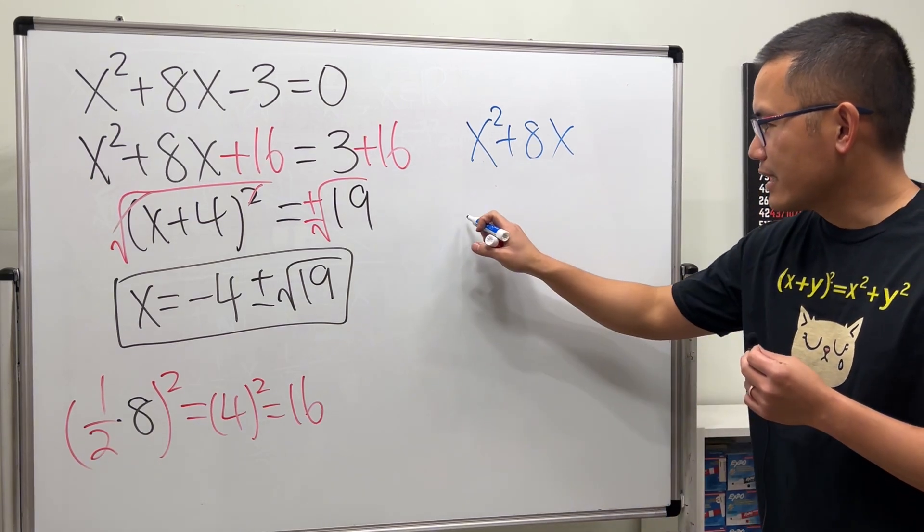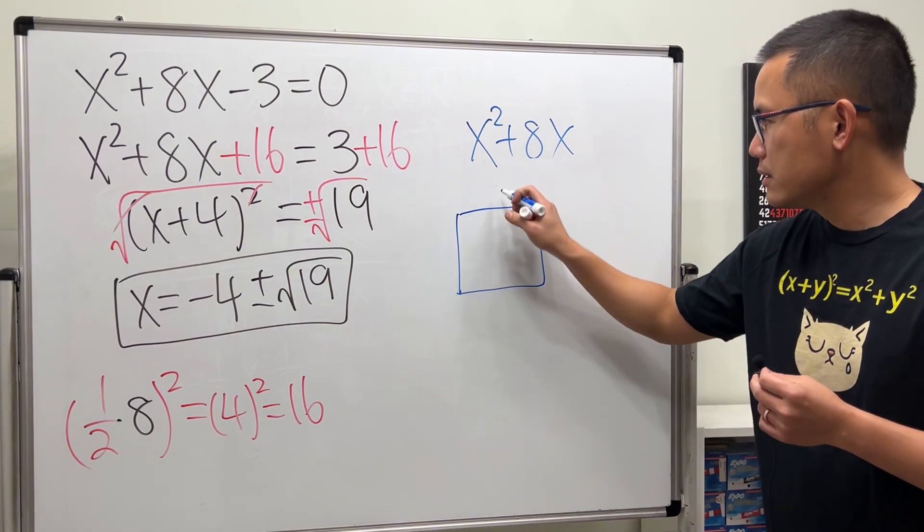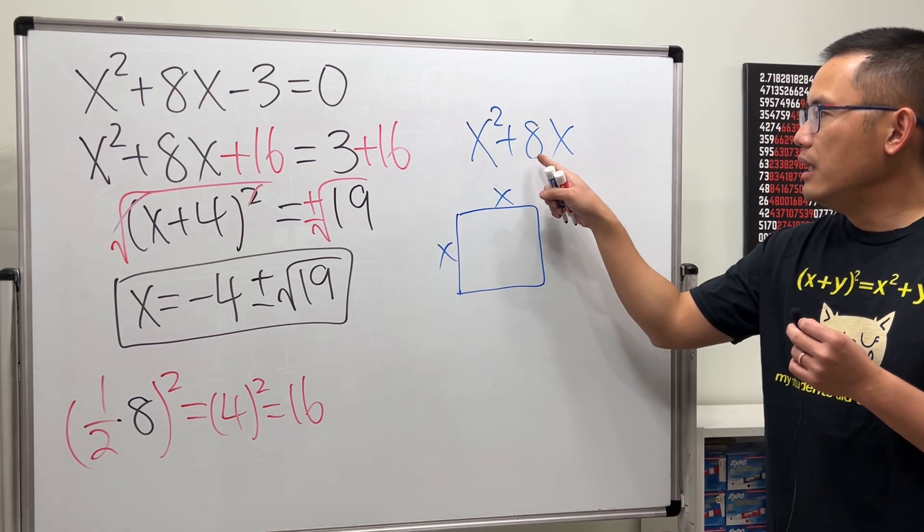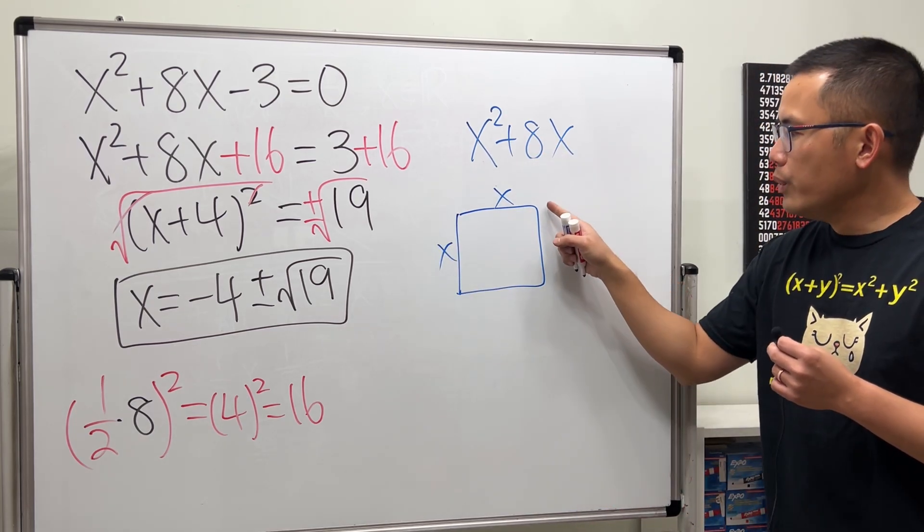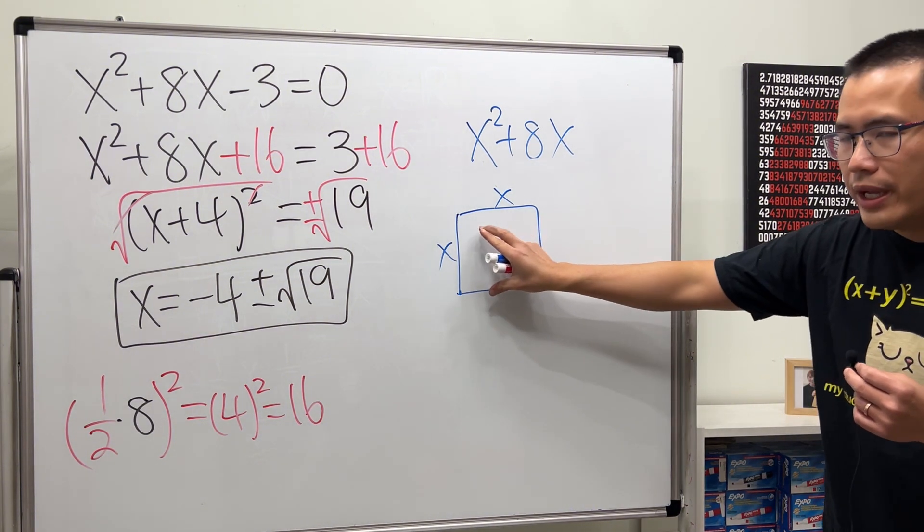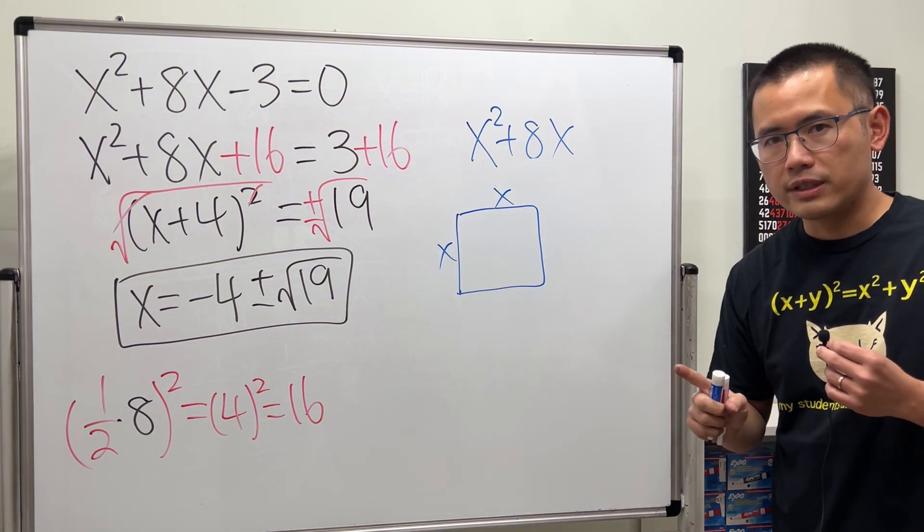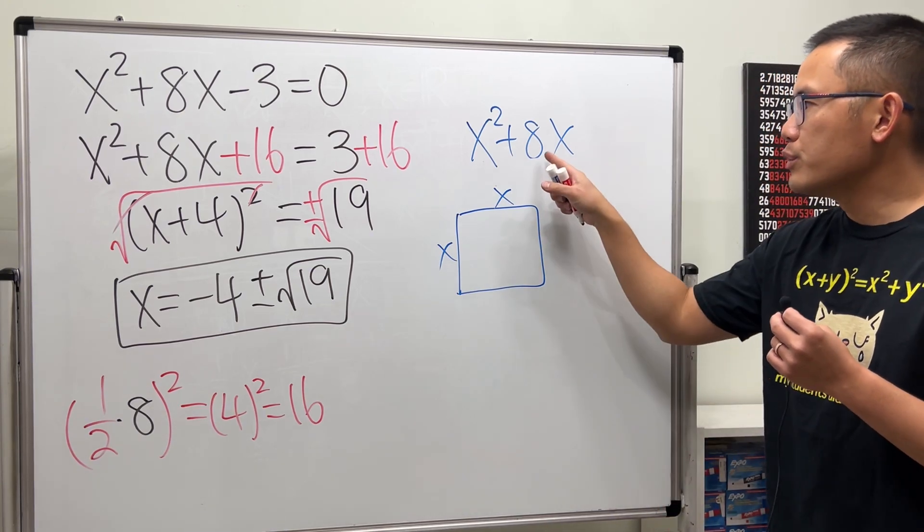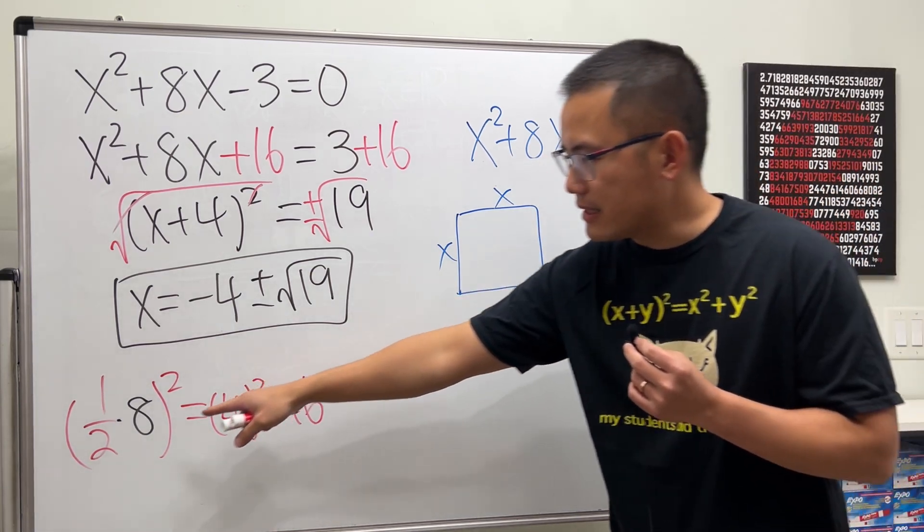Next, 8 times x, we can draw 8 like this and x like that, but we will end up with a rectangle. We don't want that. Instead, we are going to take half of 8, and that's exactly what we did.